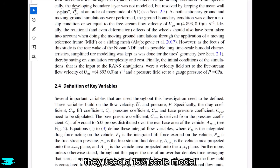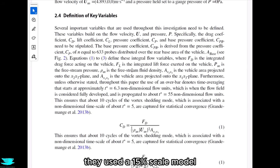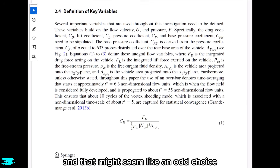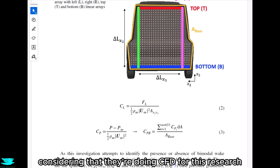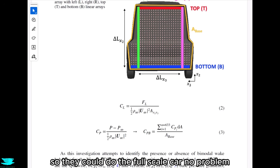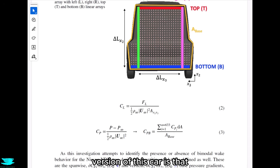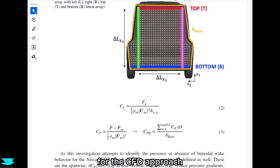They used a 15% scale model, which might seem like an odd choice considering they're doing CFD and could run the full-scale car. But the reason is that they chose something called WRLEs for their CFD approach.